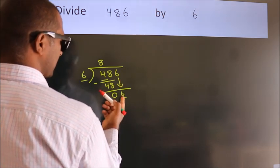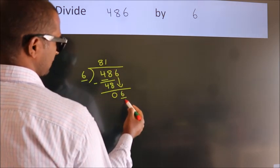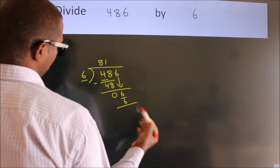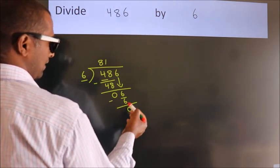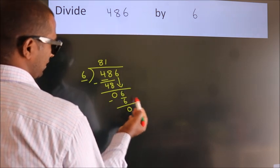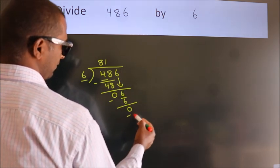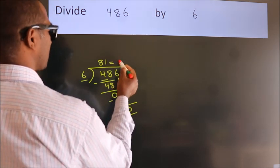When do we get 6? In the 6 table. 6 times 1 is 6. Now we subtract. We get 0. After this, no more numbers to bring it down, and we got remainder 0. So this is our quotient.